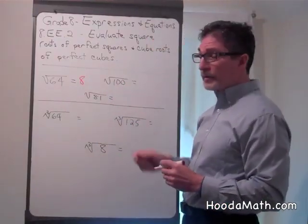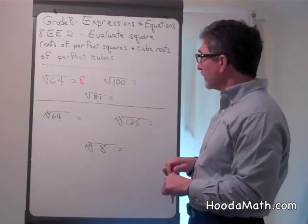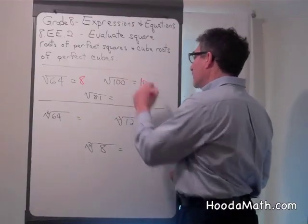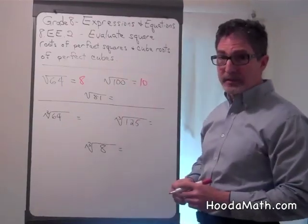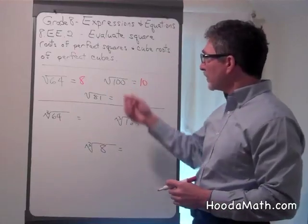What number times itself gives you 100? 10, because 10 times 10, or 10 squared, equals 100.